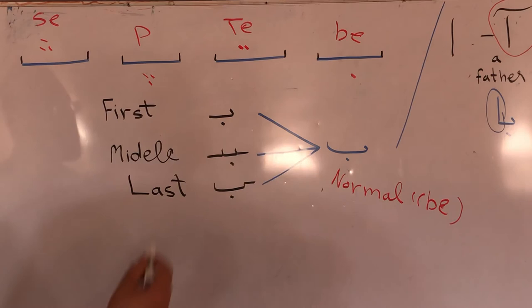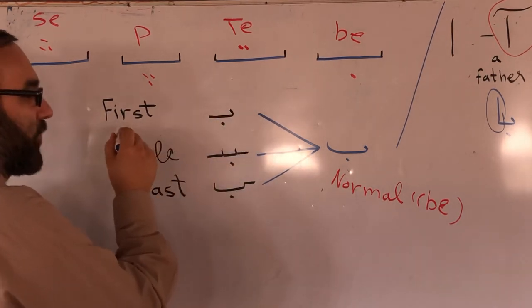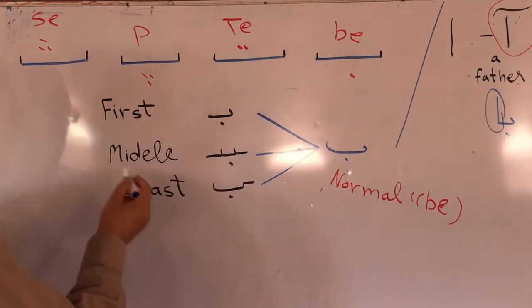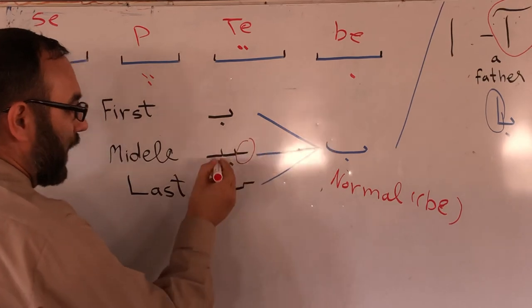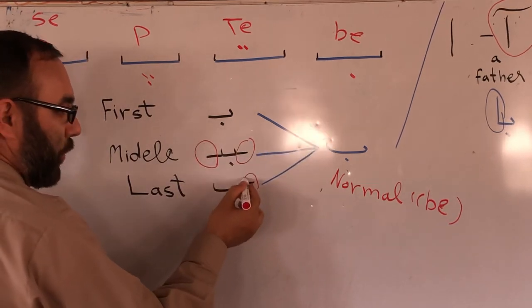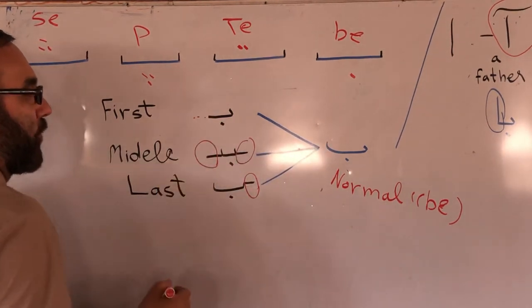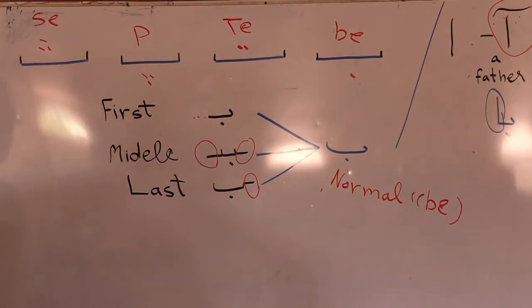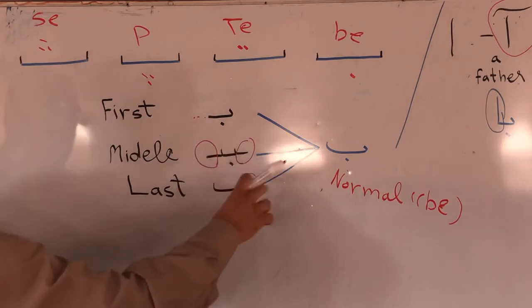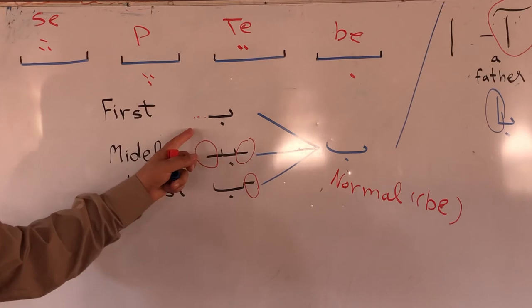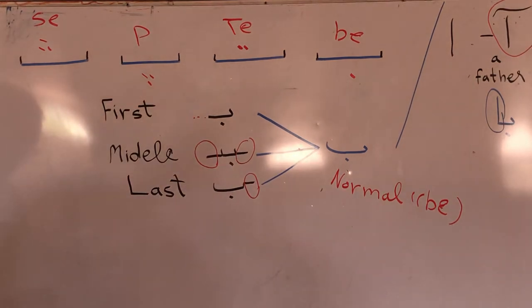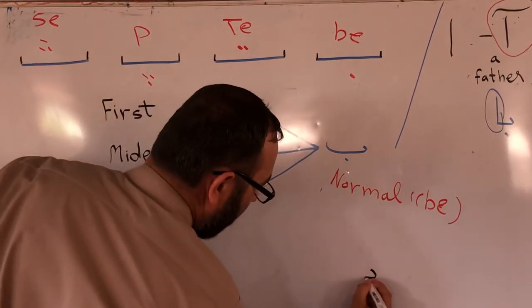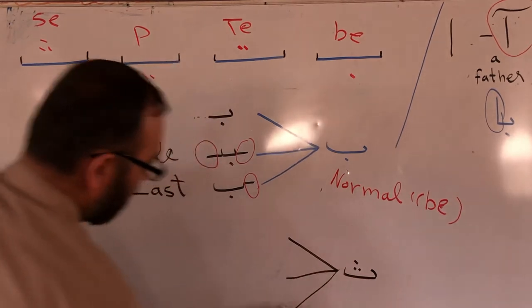Also P, also T. You can make first type of T, middle type of T. I wanna make Se. This is normal Se. But we have three types of Se. This is short first, this is middle, and this is last.